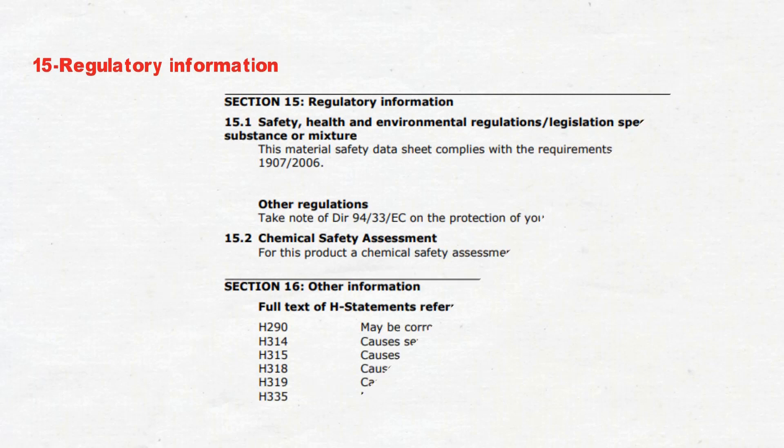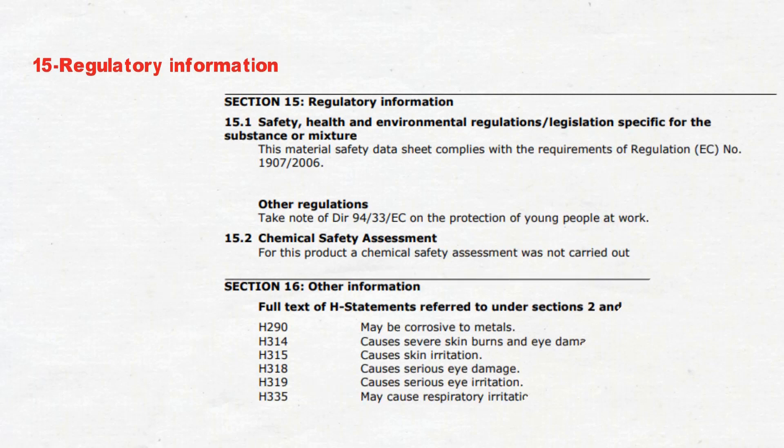Section number 15 is about Regulatory Information — details about health, safety, and environmental regulations, plus possibly a chemical safety assessment. Section number 16 will be Other Information, for example the date of the last version of the Safety Data Sheet.